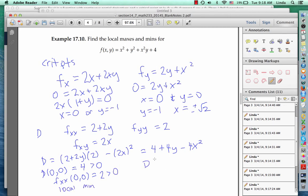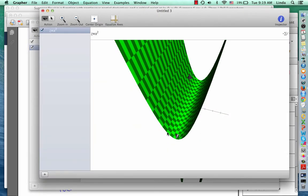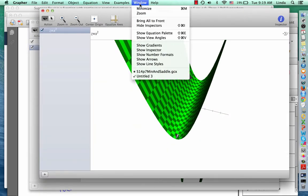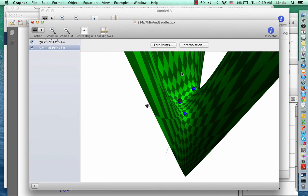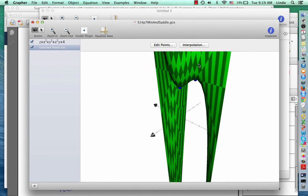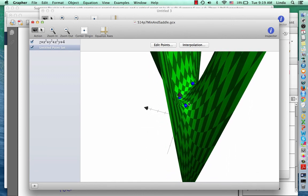If we look at the discriminant at negative 1 square root of 2, we get a value of negative 8, which is less than 0. And similarly, discriminant of negative 1 negative square root of 2 is negative 8. So we have saddle points at these two points. We can verify this by looking at the graph. You can see that there seems to be a local minimum at 0, 0, and saddle points at the other two points marked.